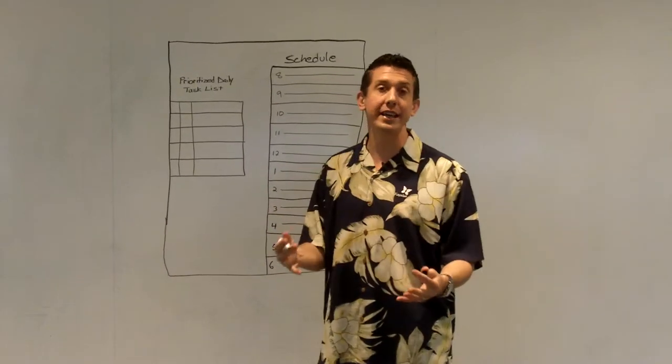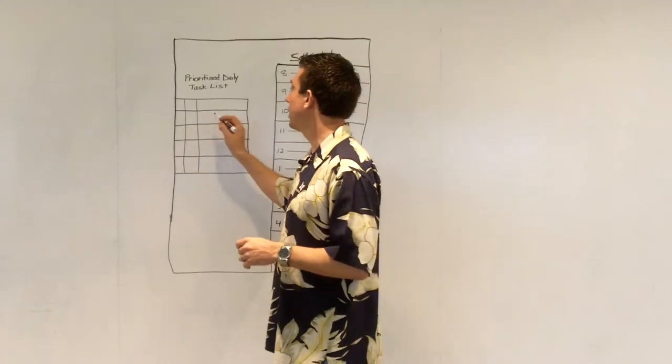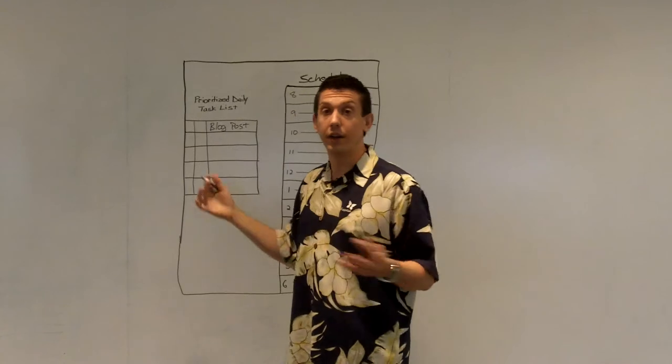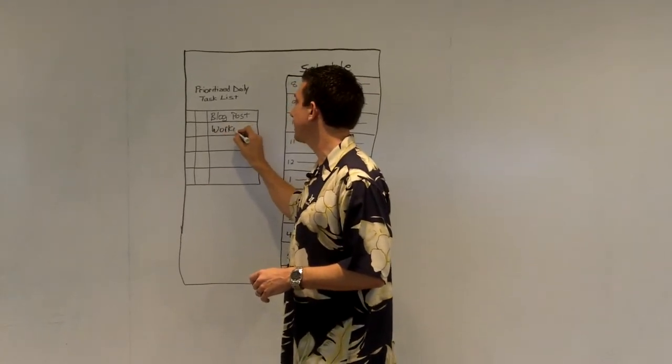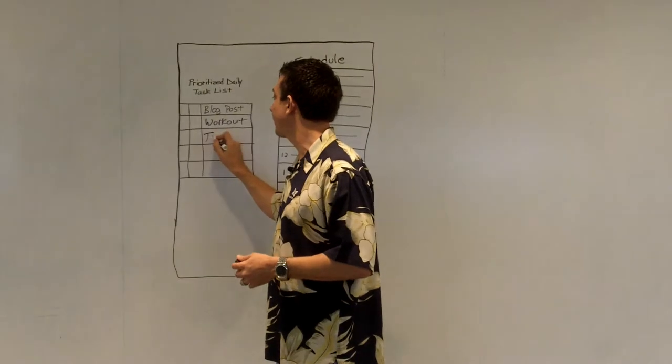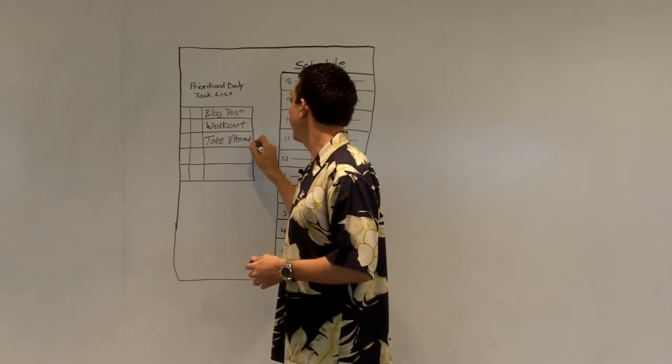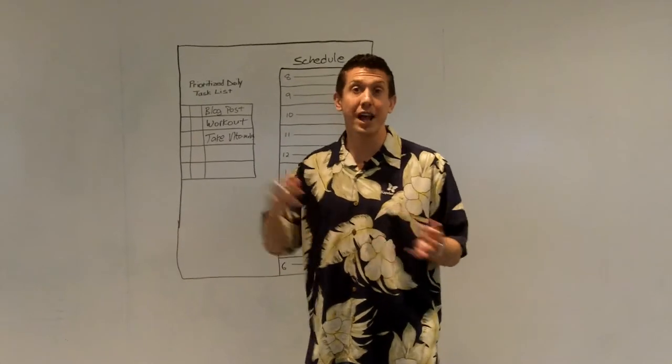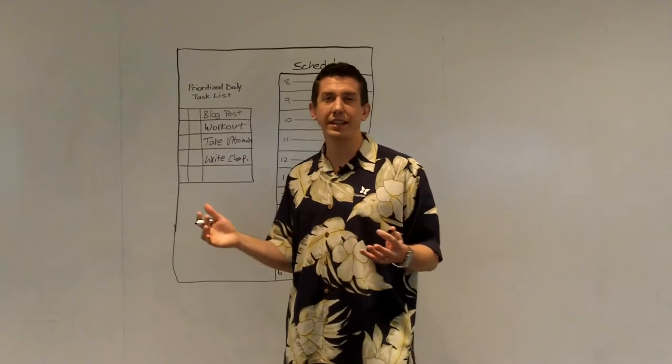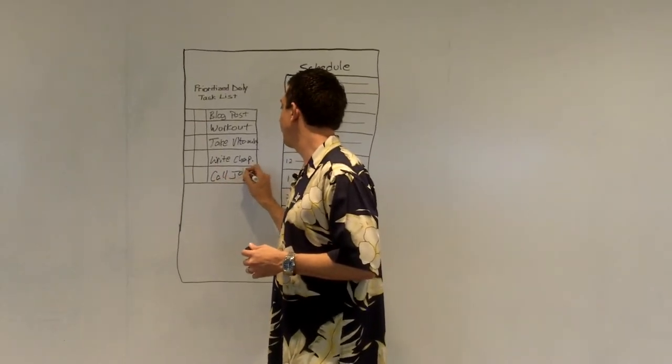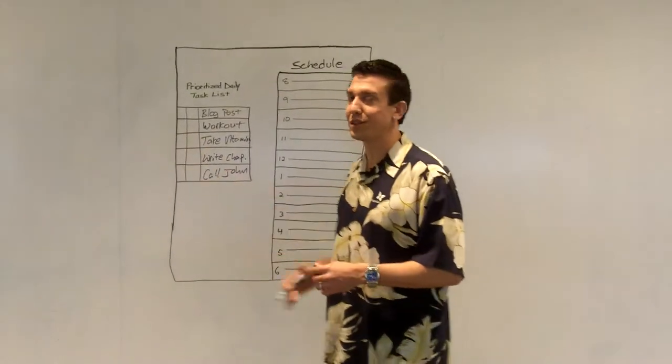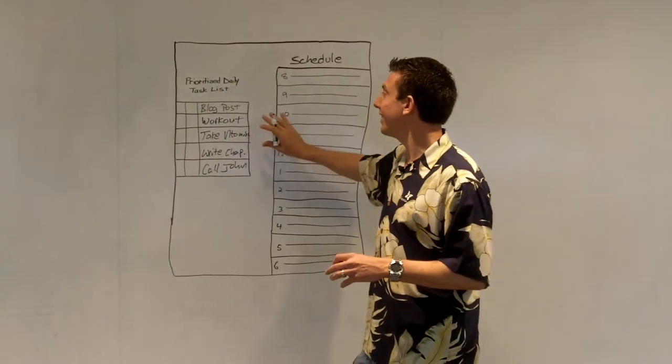So the first thing I do is I go through all of the things that I know I need to do for the next day. And so let's say I know I need to do a blog post, and I know I've got a workout with my trainer for the next day, I know I need to take my vitamins, I may need to write a chapter in my next book, and let's say I may need to call someone, so I'll say call John. Now, I just put five things here. Typically, there's a lot more than five, but for simplicity, we'll just do the five here.